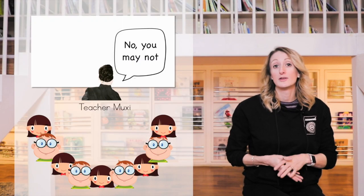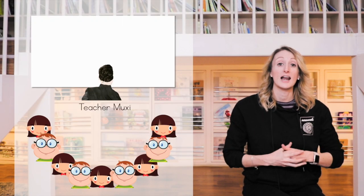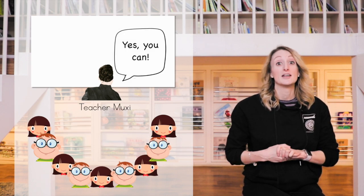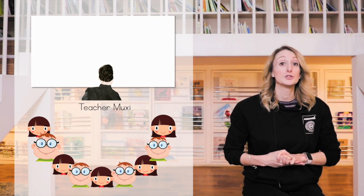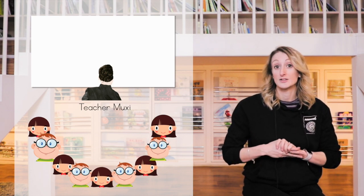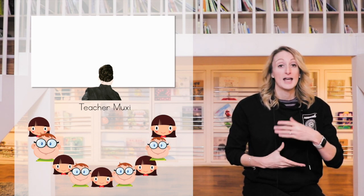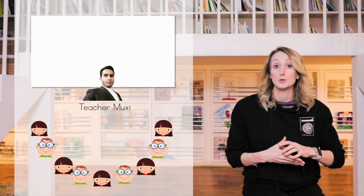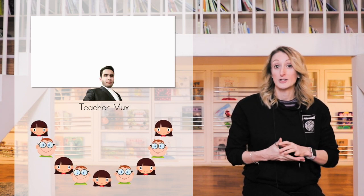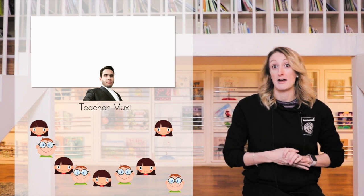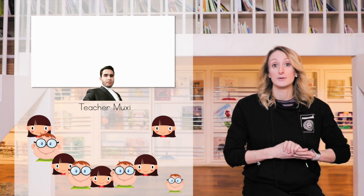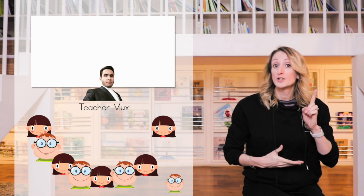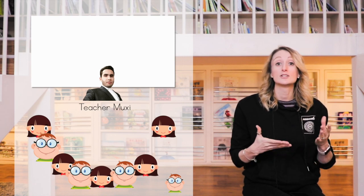Once again, you're going to reply with, no, you may not, and have the whole class ask you again. Once you've built up some suspense, you can reply with, yes, you can, at which point all the students need to sit down as quickly as possible. As soon as you say the words 'yes, you can,' you also need to turn around to see which student was the slowest to sit down. That student is out. Have the whole class stand up and go again. Keep going until there's only one student left, who is crowned the winner.